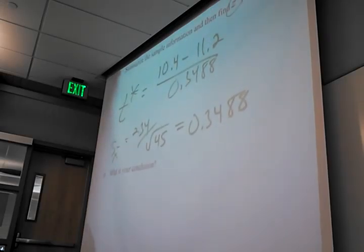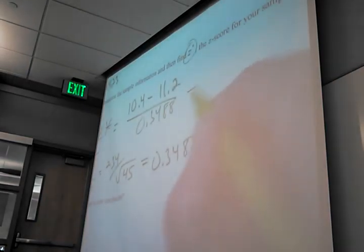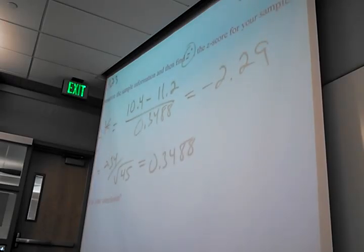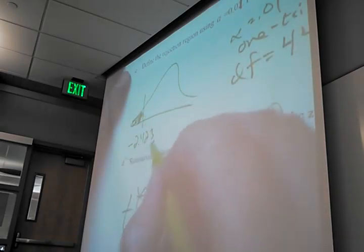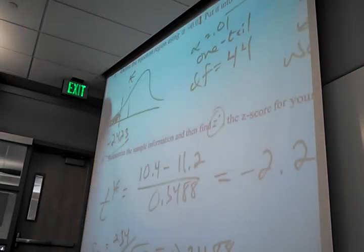10.4 minus 11.2 over 0.3488 equals negative 2.29. Negative 2.29. So right there without doing the p-value I can actually answer the question. I can see the answer already. Did we make it far enough away? No, we had to make it at least this far and we're here at negative 2.29. We did not make it far enough away. We didn't make it past the benchmark.